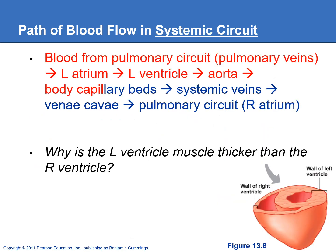Looking at a cross section of the heart at the ventricles, you can see that the wall of the left ventricle is a lot thicker than the wall of the right ventricle. That's because the left ventricle pumps oxygenated blood out to the rest of the body — a much farther distance than the right side, which only has to pump blood out to the nearby lungs. Pumping a farther distance means more resistance, requiring much higher pressure, which is why the left ventricle walls are thicker.